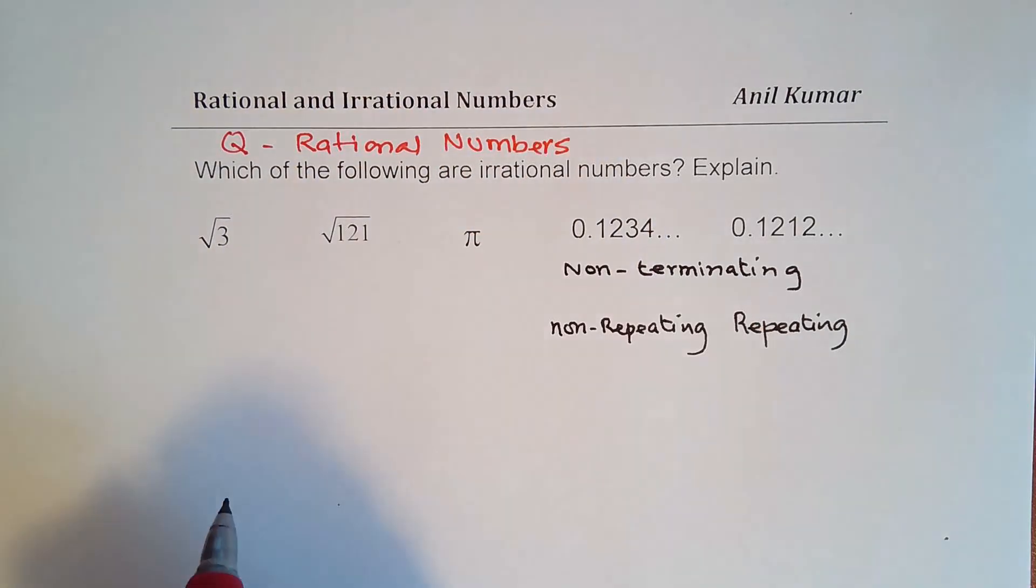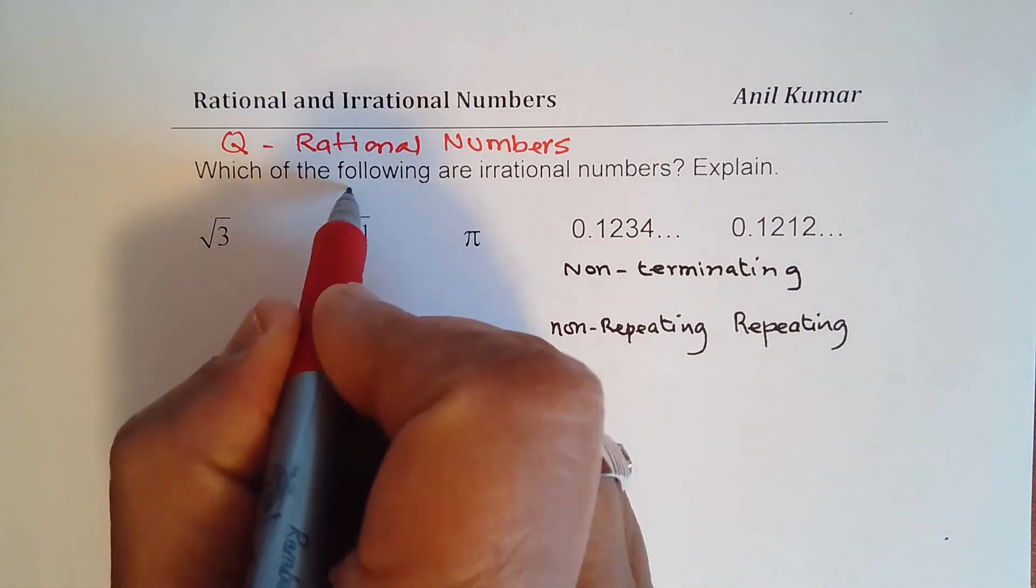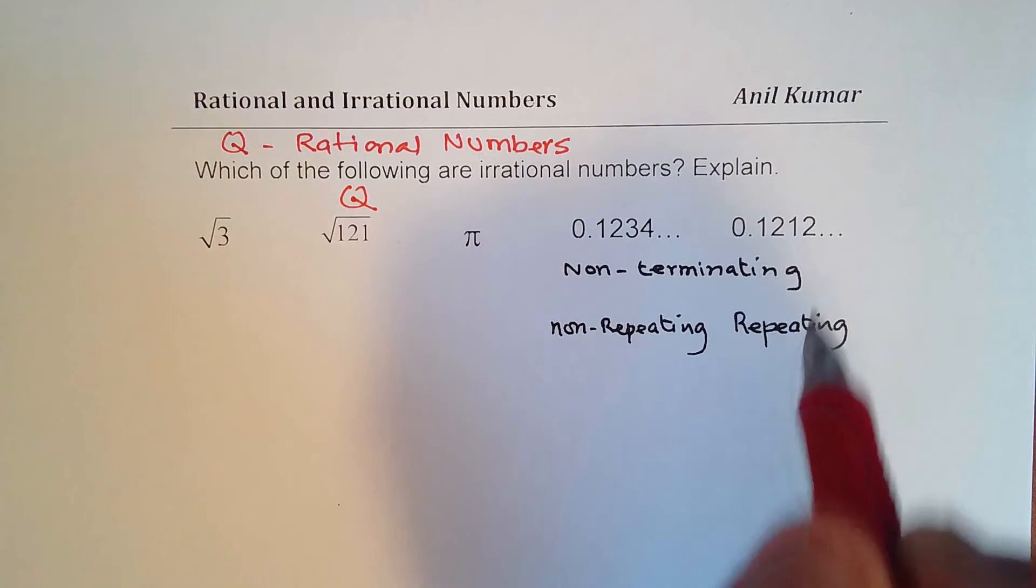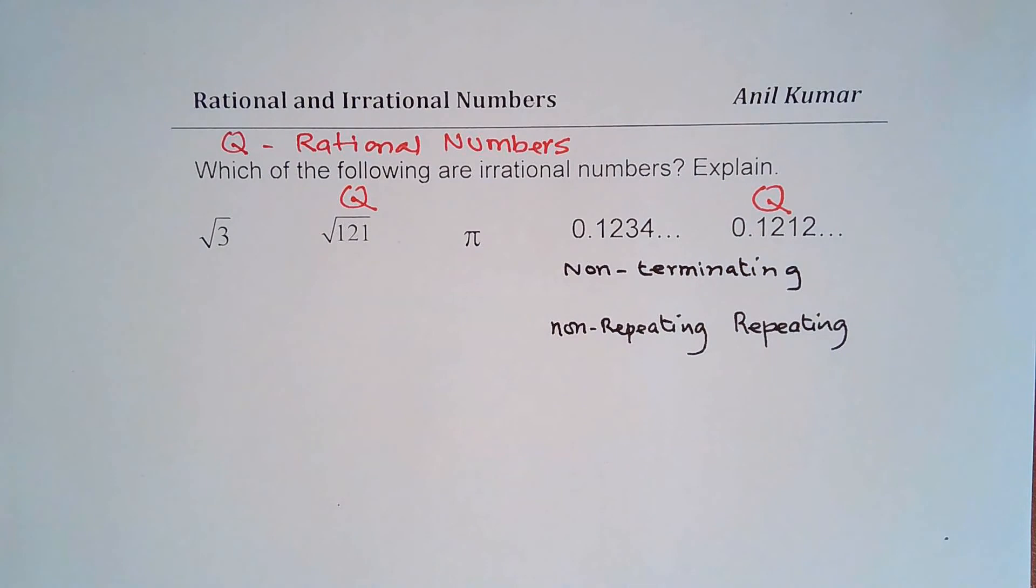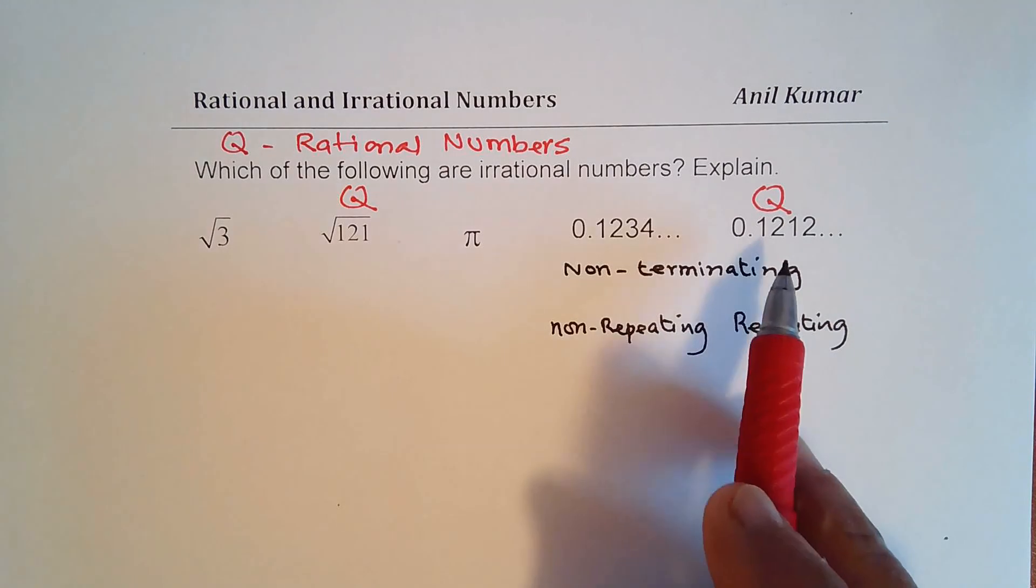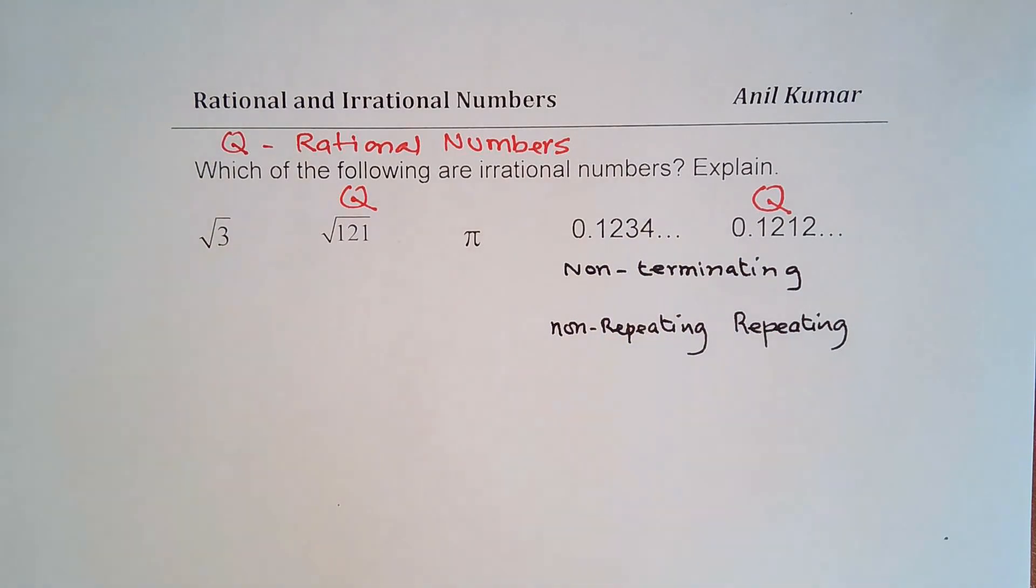So what do you think are rational numbers out of these five? Well, the rational numbers are these two: square root of 121 and the non-terminating repeating number. The reason being that the non-terminating repeating number can be written as a fraction, as a rational number P over Q.